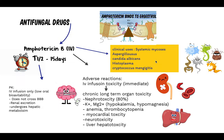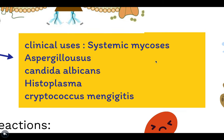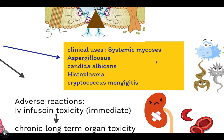The clinical use of Amphotericin B is mainly systemic mycosis, and it's usually used in initial therapy in life-threatening conditions — in patients suffering from AIDS and in cancer patients. Diseases caused by Aspergillosis, Candida albicans, Histoplasma, Blastomyces, and Cryptococcus. So when you see any of these in a very urgent, life-threatening condition, think to use Amphotericin B.